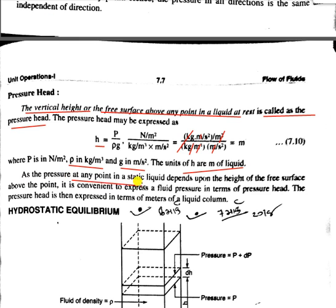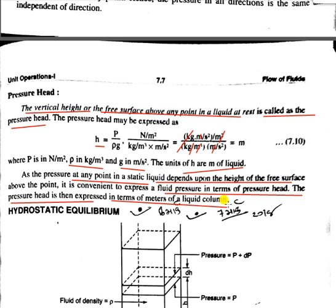The pressure head at any point in a static liquid depends upon the height of the free surface above the point. It is convenient to express fluid pressure in terms of pressure head. The pressure head is then expressed in terms of meters of liquid column.